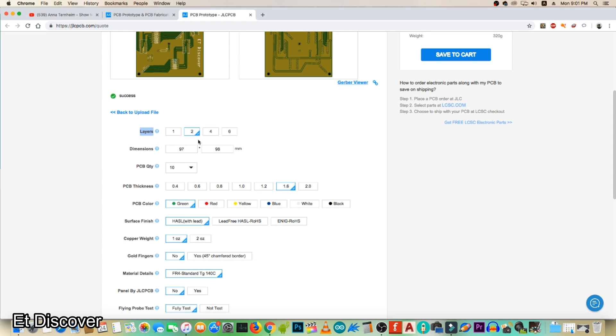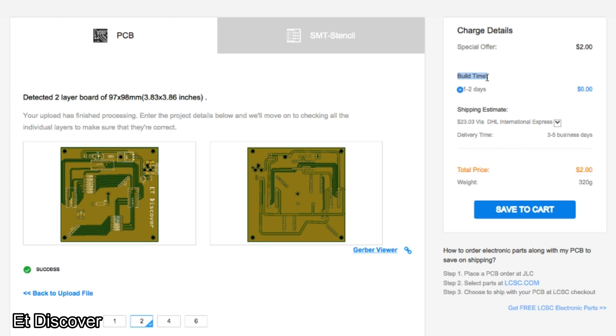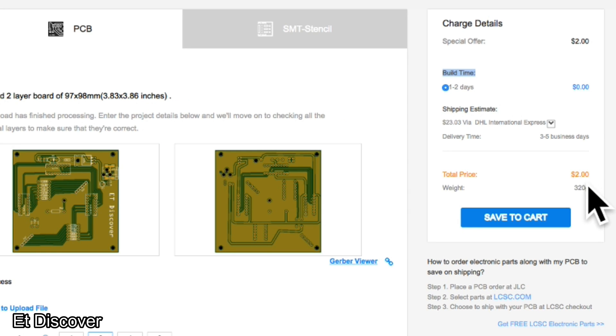So JLCPCB are producing the common two-layer PCB within 24 hours and no need additional fee for this. They take very few dollars to give you PCBs.